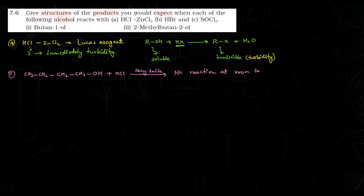Aisa isliye kyunki agar aap dhyan se dekhenge to yeh jo alcohol aapko given hai — this is a primary alcohol. OH juda hai ek primary carbon se. Tertiary alcohols immediately turbidity dete hain Lucas reagent ke saath; secondary alcohols ko thoda time lagta hai (15–20 minutes ya half an hour). Lekin primary alcohols room temperature par turbidity nahi denge. Agar aap temperature badhayenge to reaction proceed karegi aur product milega: CH3-CH2-CH2-CH2-Cl.